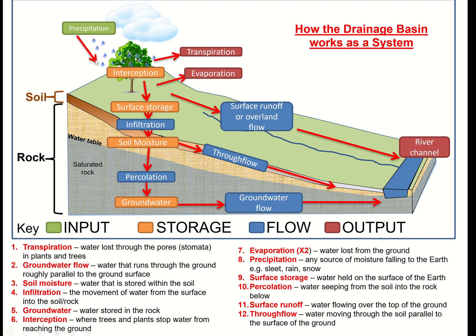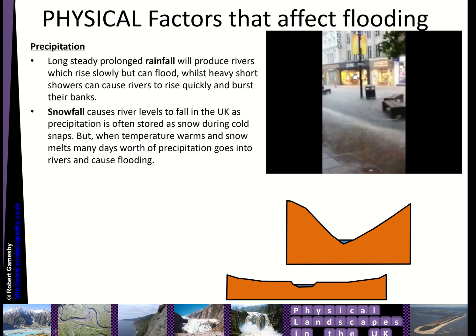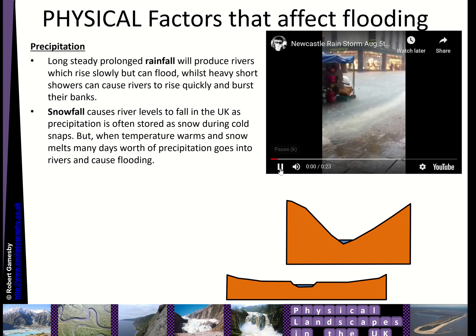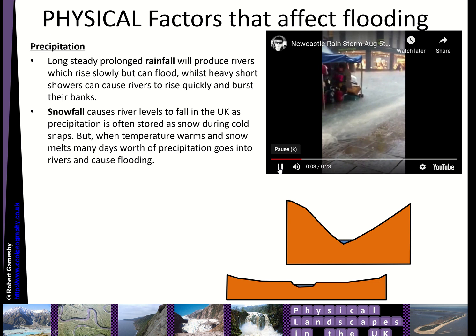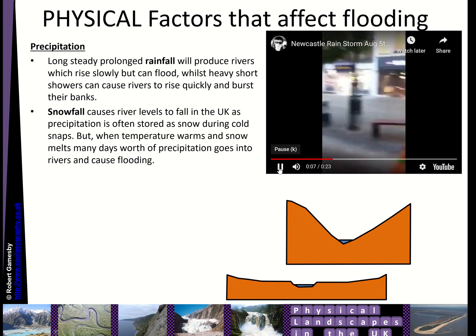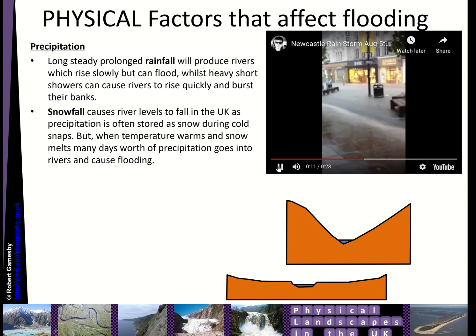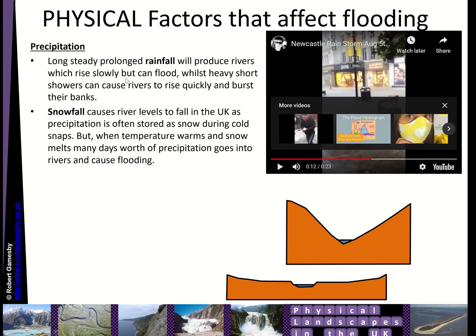All of these things are variable depending on the types of trees, rock, and soil — those are all natural factors. The physical factors that affect flooding include precipitation. Long, steady, prolonged rainfall produces rivers which rise slowly but can flood, whilst heavy short showers can cause rivers to rise quickly and burst their banks. Snowfall can cause really high river levels if it melts very quickly after being stored for a period of time.